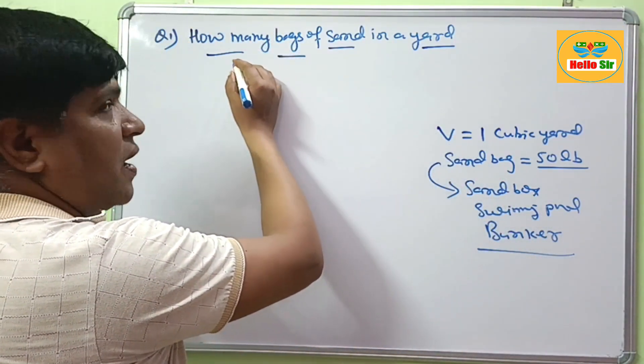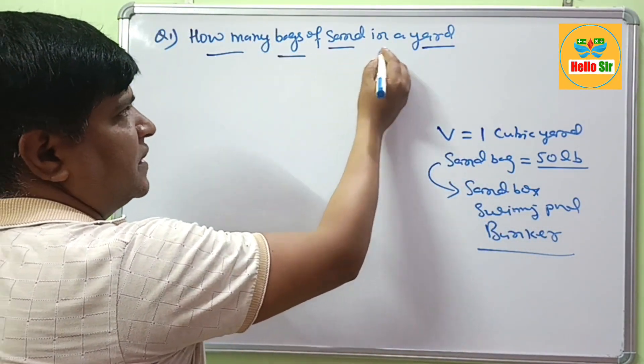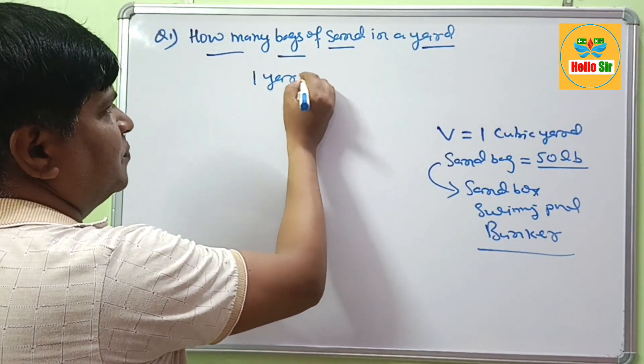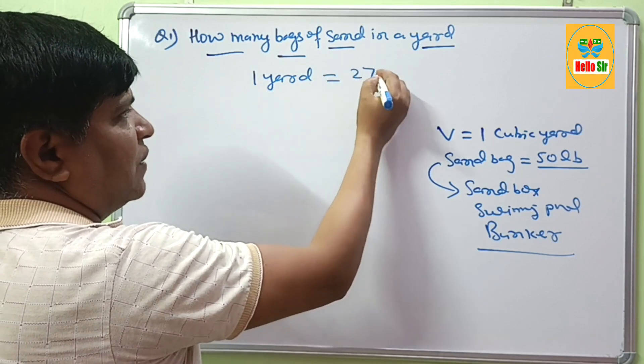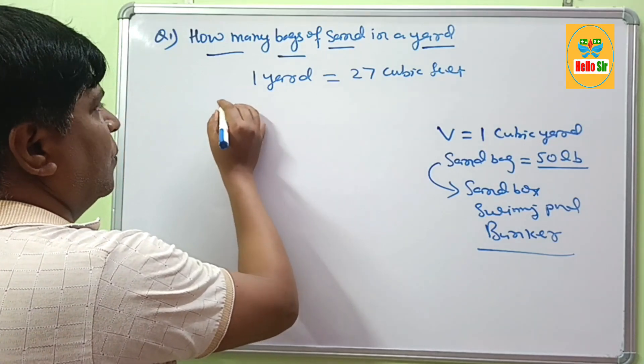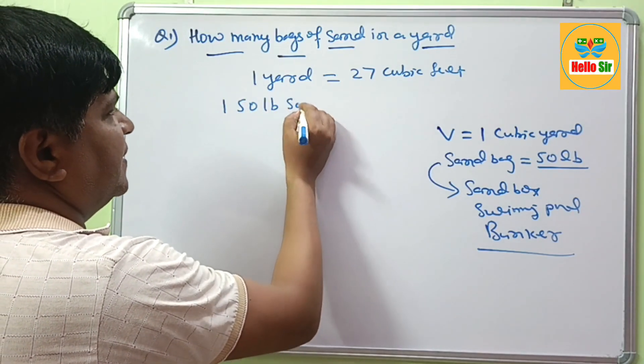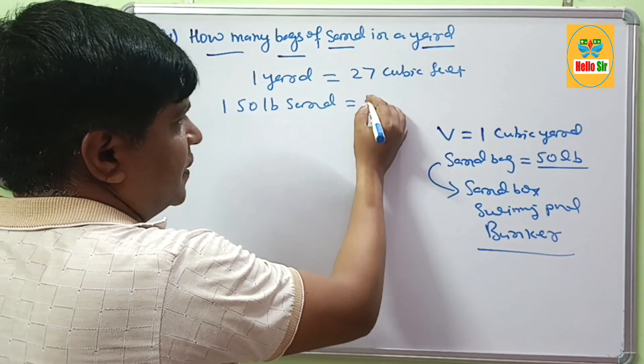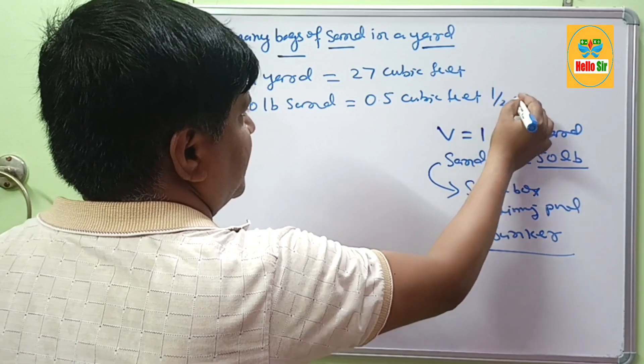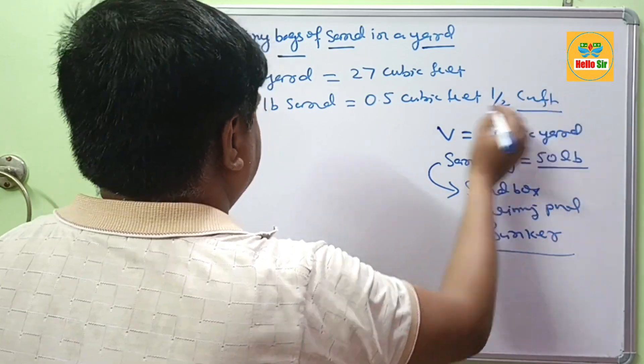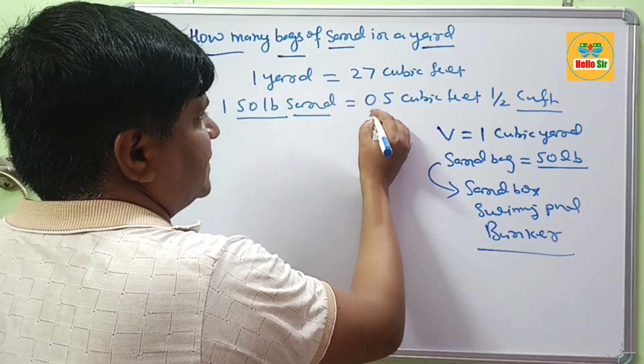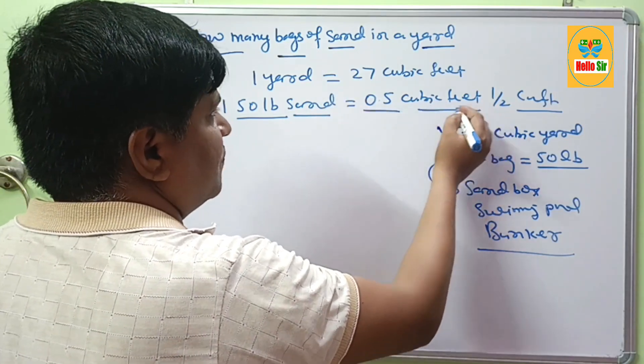You have to calculate how many bags of sand in 1 yard. 1 yard simply is 27 cubic feet, and 1 bag of 50 lb sand is about 0.5 cubic feet, meaning half cubic feet.